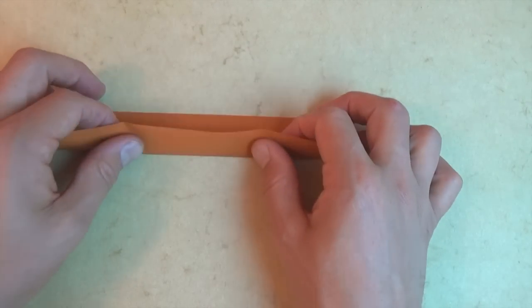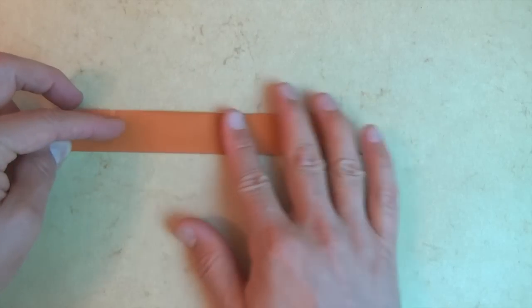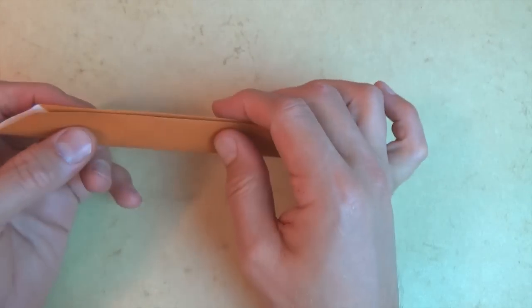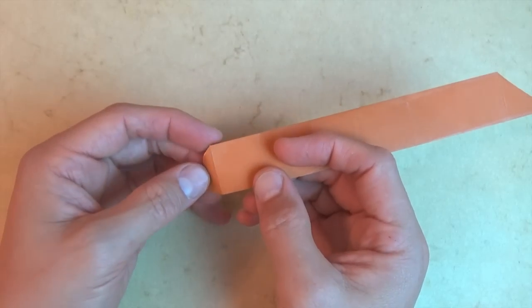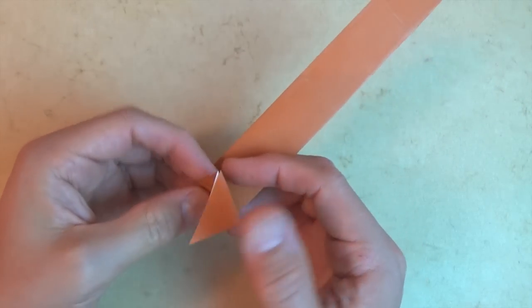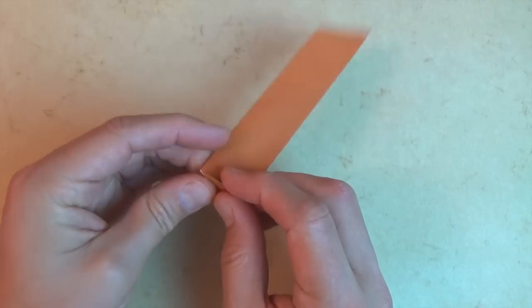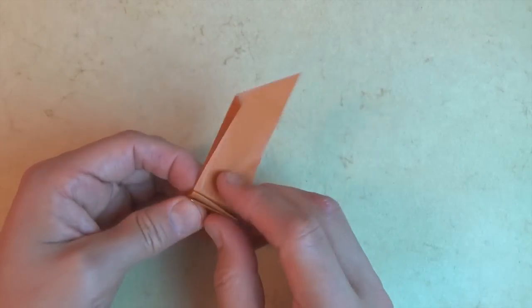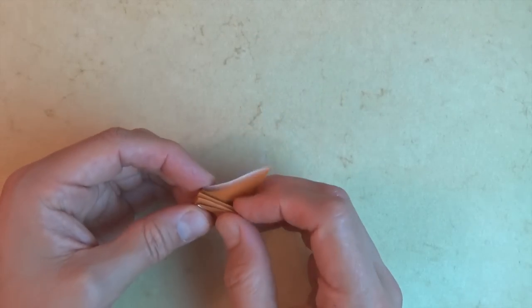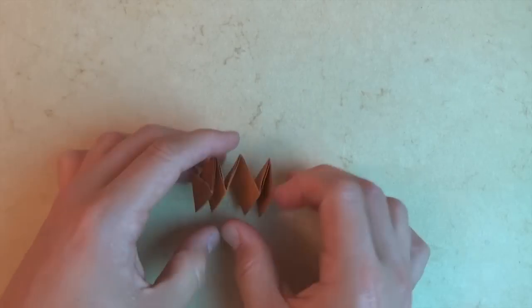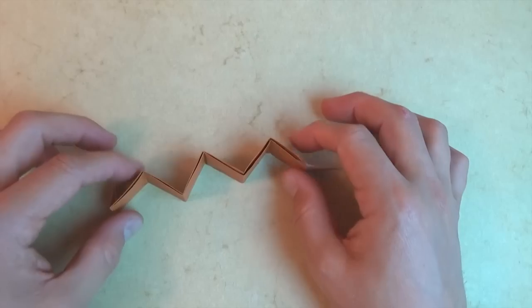And let's fold in half. And now let's just pleat this on existing creases. So, mountain, mountain, valley, mountain, valley, mountain, valley, and mountain. And there is the earth.